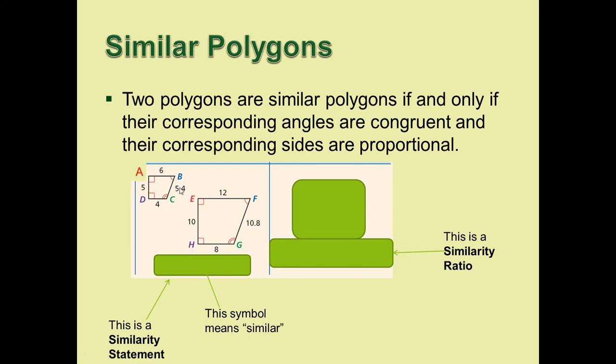A is congruent to E, B right here is congruent to F, C is congruent to G, D is congruent to H. Those are all congruent to each other. However, our polygons are not congruent because they're not the same size.